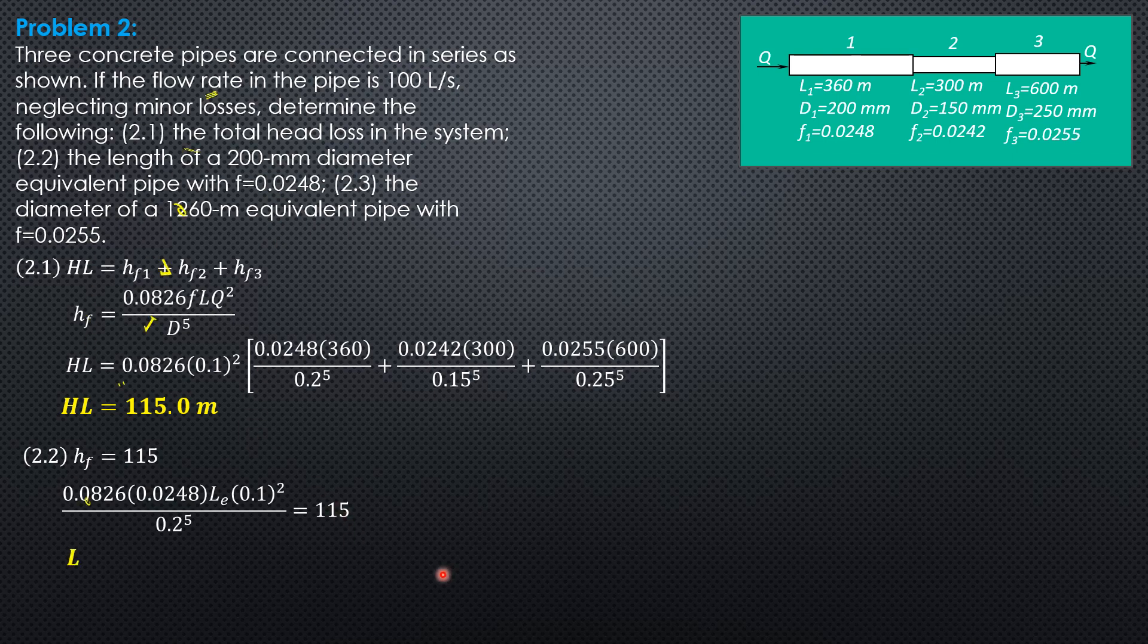So the equivalent length of a single pipe that replaces the system with diameter 200 mm is 1,796.